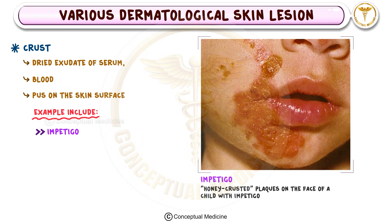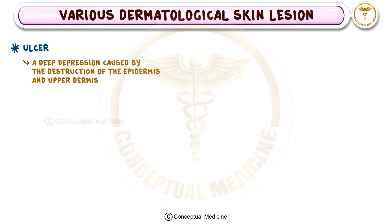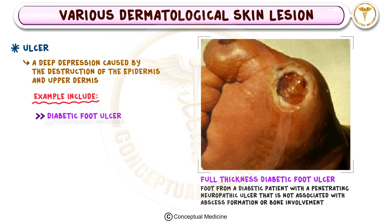An ulcer is a deeper lesion caused by the destruction of the epidermis and upper dermis. Ulcers can result from various conditions, such as diabetic foot ulcers, which develop due to prolonged pressure and poor circulation in individuals with diabetes.